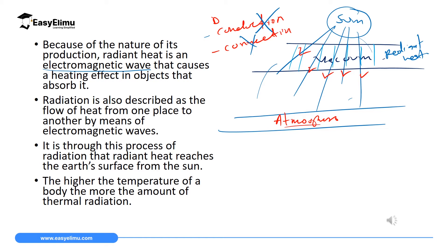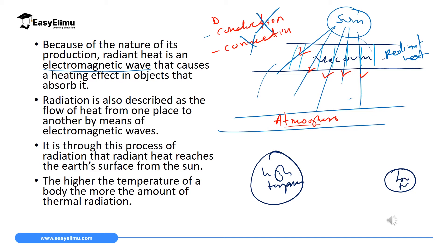A body with higher temperature has more radiant heat than a body with lower temperature. So if you have two bodies — one at high temperature and one at low temperature — the high-temperature body has high radiant heat, and the low-temperature body has low radiant heat. This is very important to note.